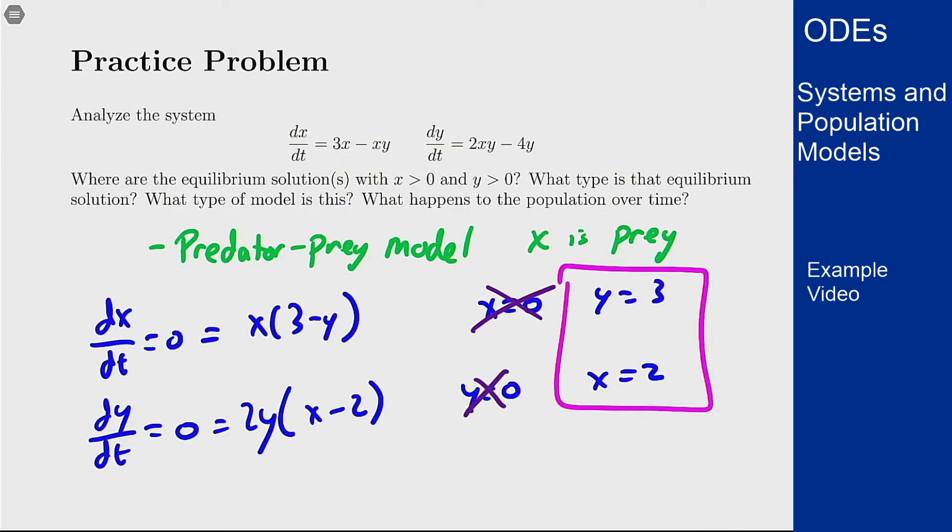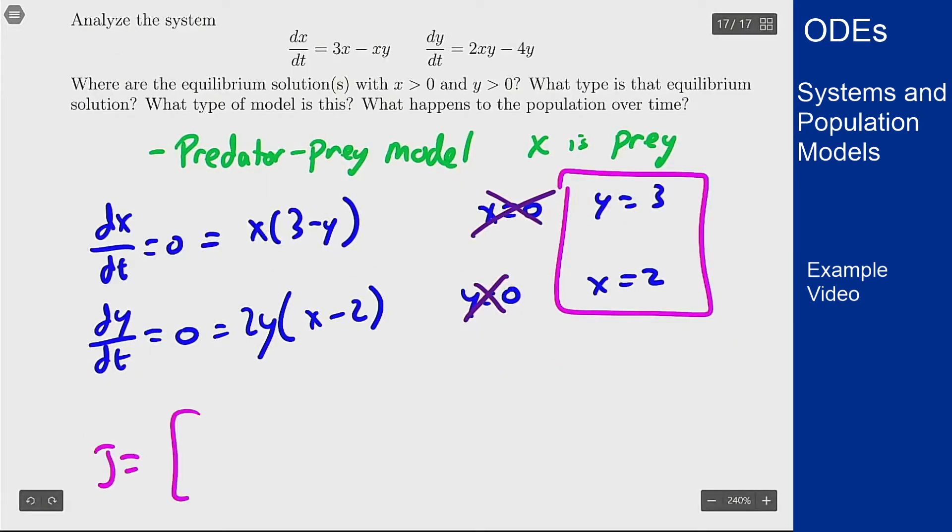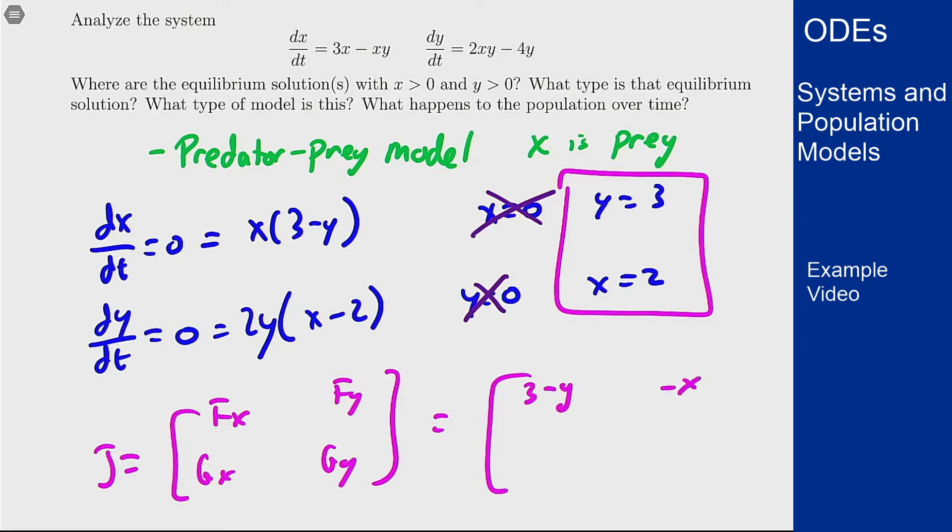To classify this, let's find the Jacobian matrix. So the Jacobian matrix here is fx, fy, gx, and gy. The derivative of that first function in x, I get 3 - y. To differentiate in y, I just get -x. For the y equation, differentiating in x, I just get 2y. To differentiate in y, I get 2x - 4.